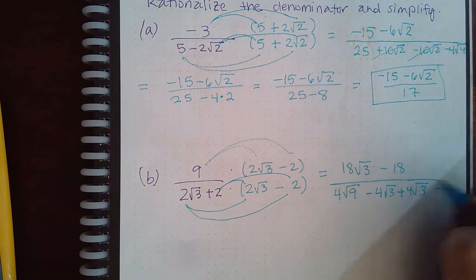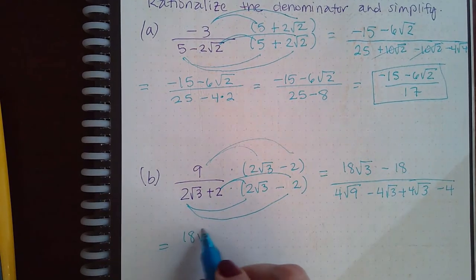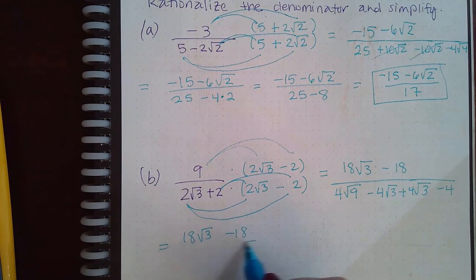So I get 18 square root of 3 minus 18 over 4 times 3. These will cancel minus 4.